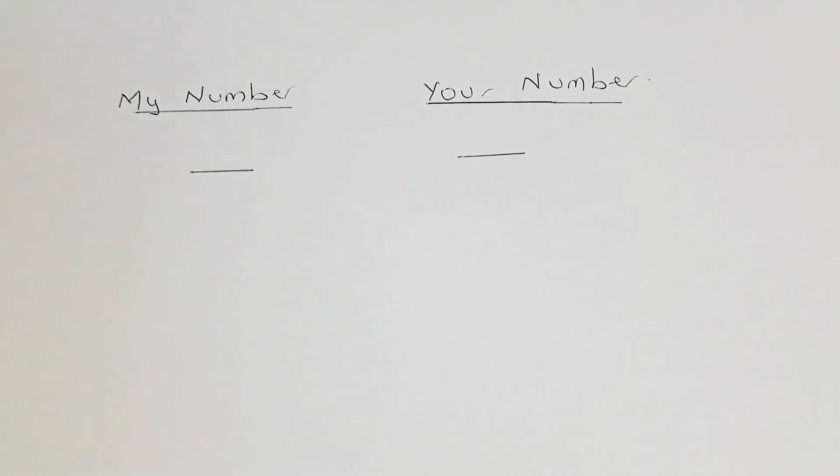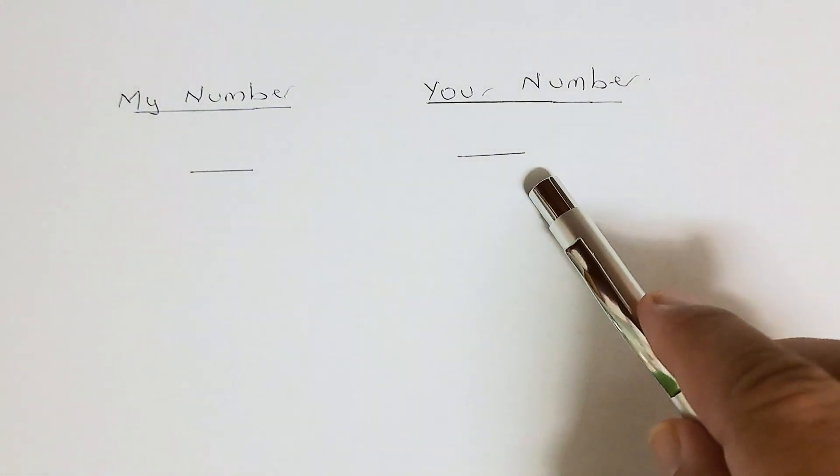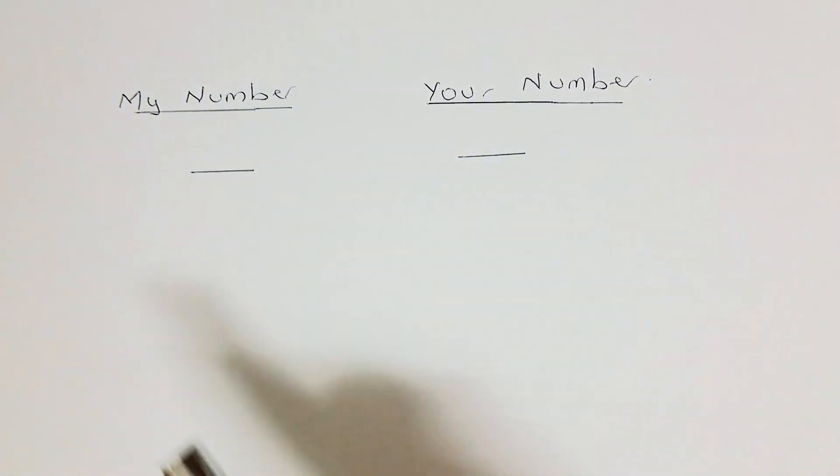The trick is you are going to choose a number between 1 to 9. Similarly, I will choose a number between 1 to 9. At the end of the calculation, I am going to reveal both your number and my number. So bring out a calculator and let's do some calculation.